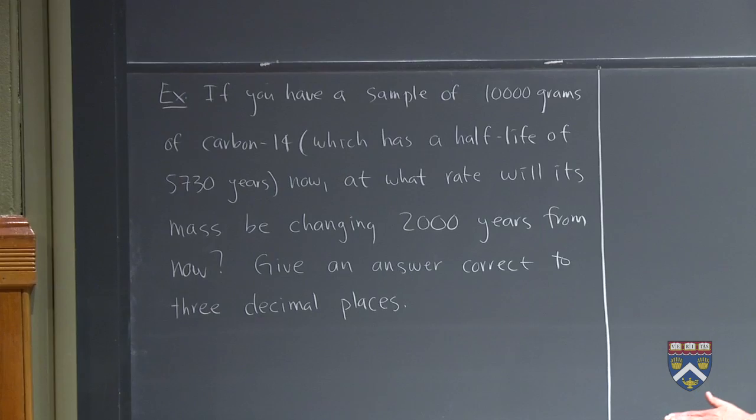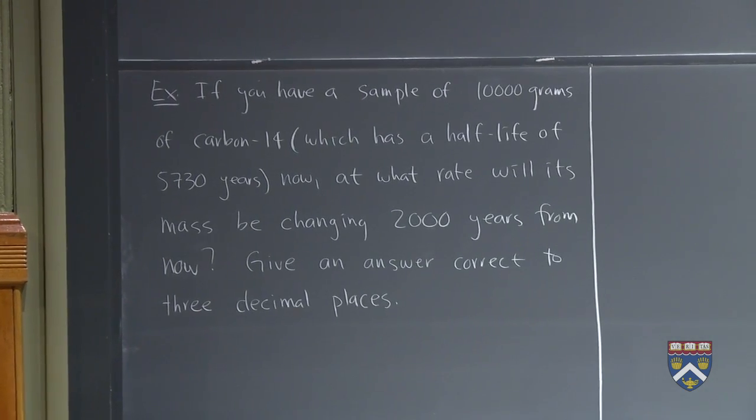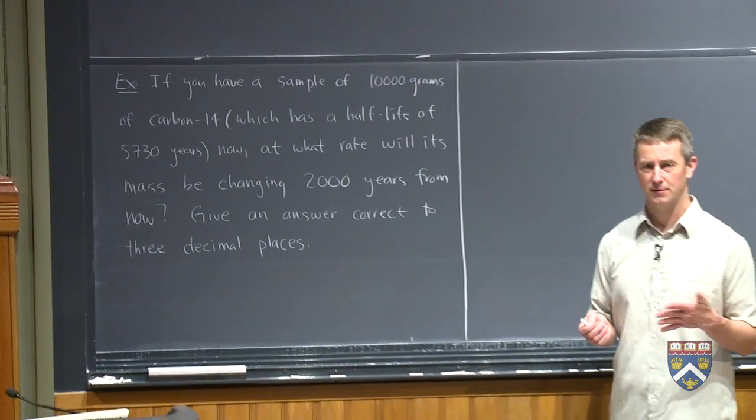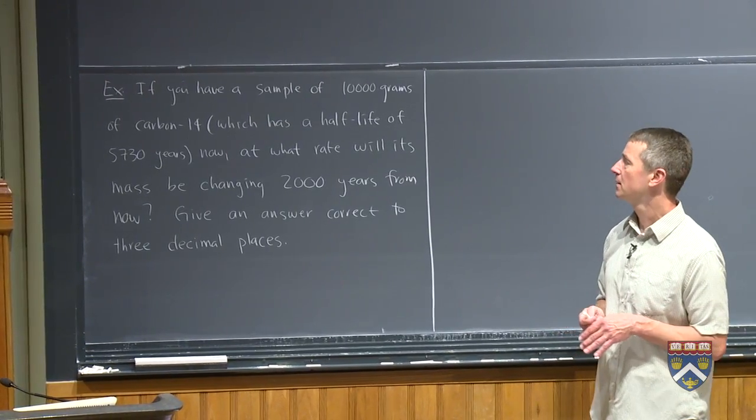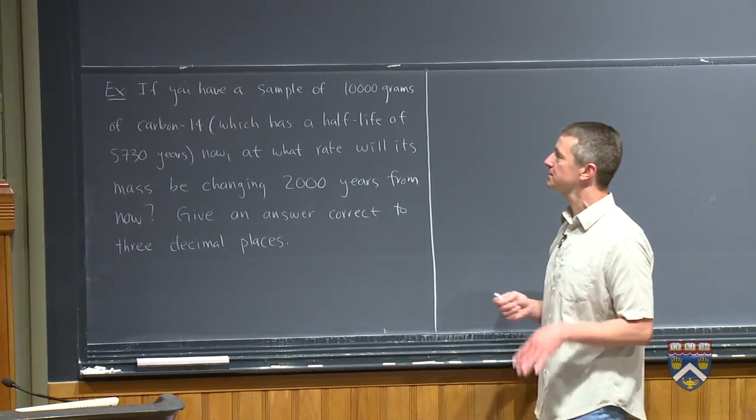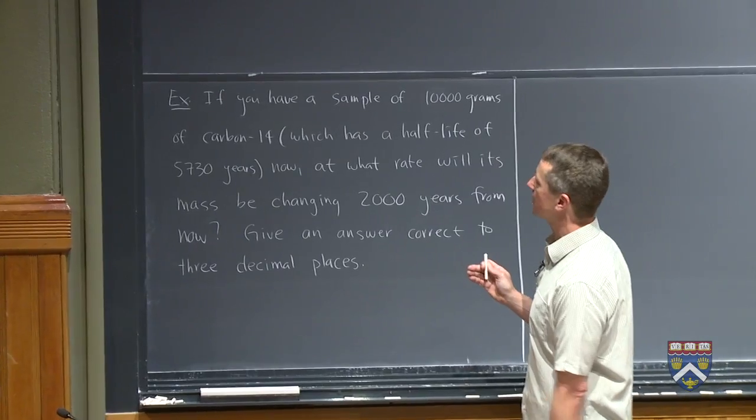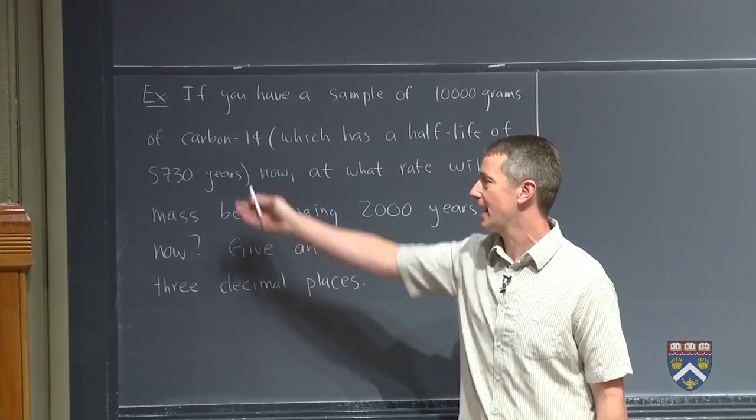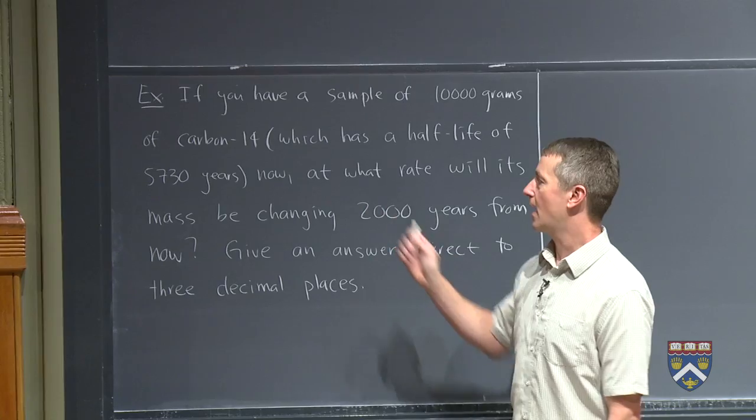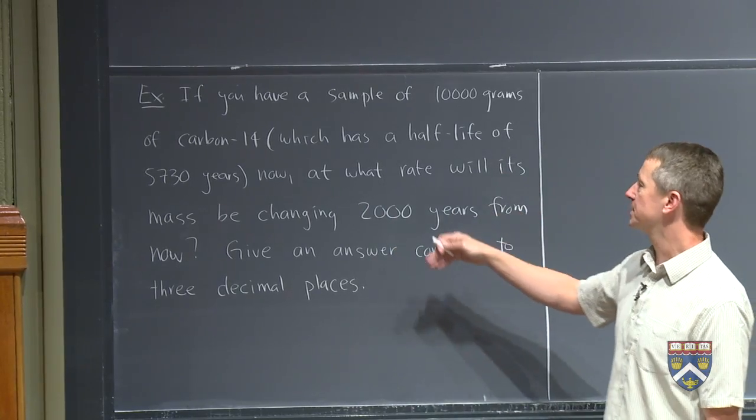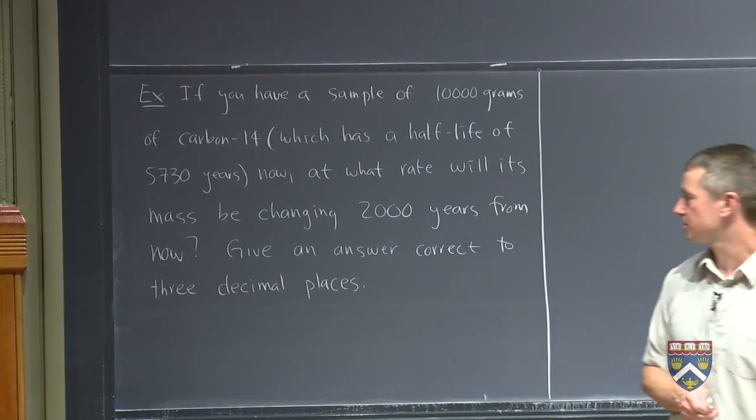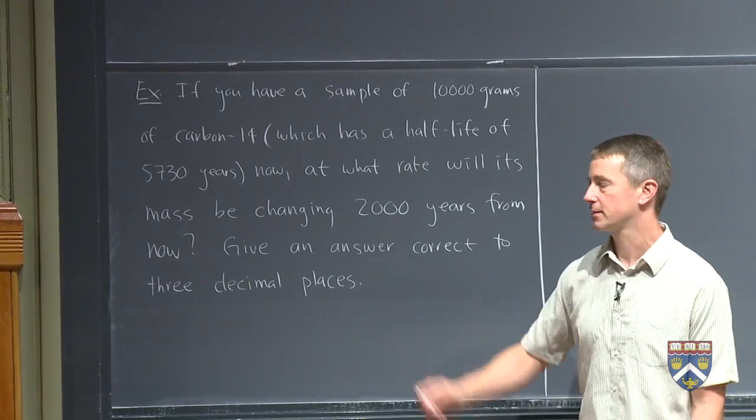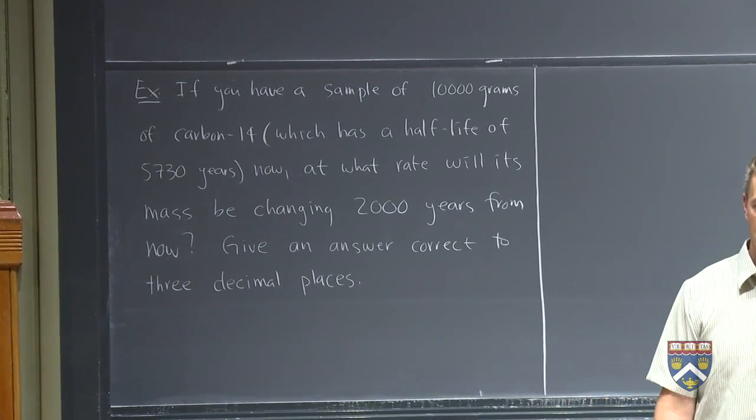So this is a carbon-14 problem. Remember carbon-14 we talked about the first night? We use it for radioactive dating of old specimens. So suppose that you have a sample of 10,000 grams of carbon-14. Remember, that has a half-life of 5,730 years. Right now, at what rate will its mass be changing 2,000 years from now? And we like to give an answer correct to three decimal places, meaning we are going to get out the calculator this time.